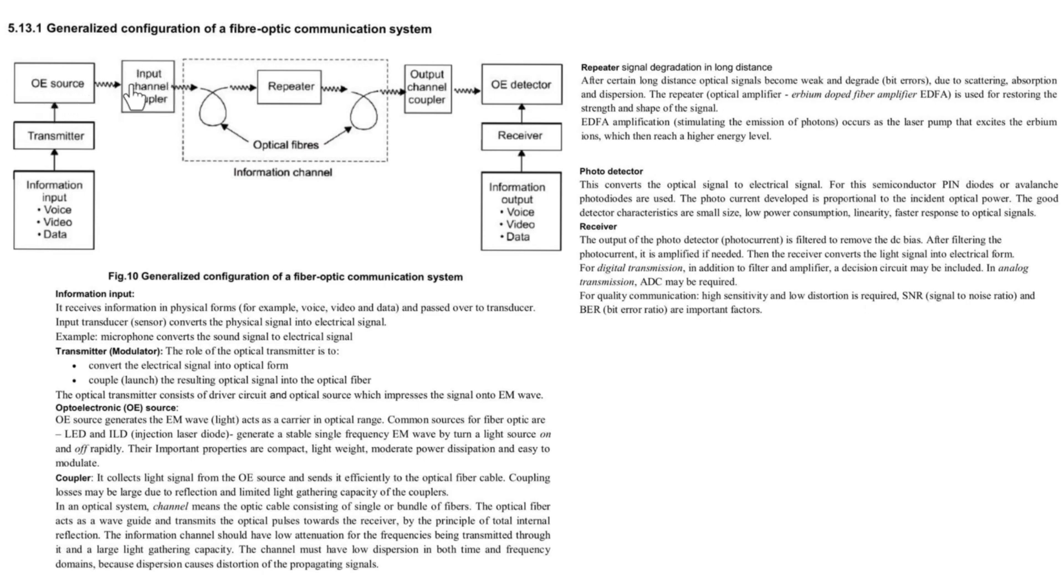Next is coupler. Coupler is available at both input as well as output. The coupler collects the light signal from OE source and it send it efficiently to the optical fiber cable. The coupling losses may be large due to reflection as well as limited light gathering capacity of the coupler.